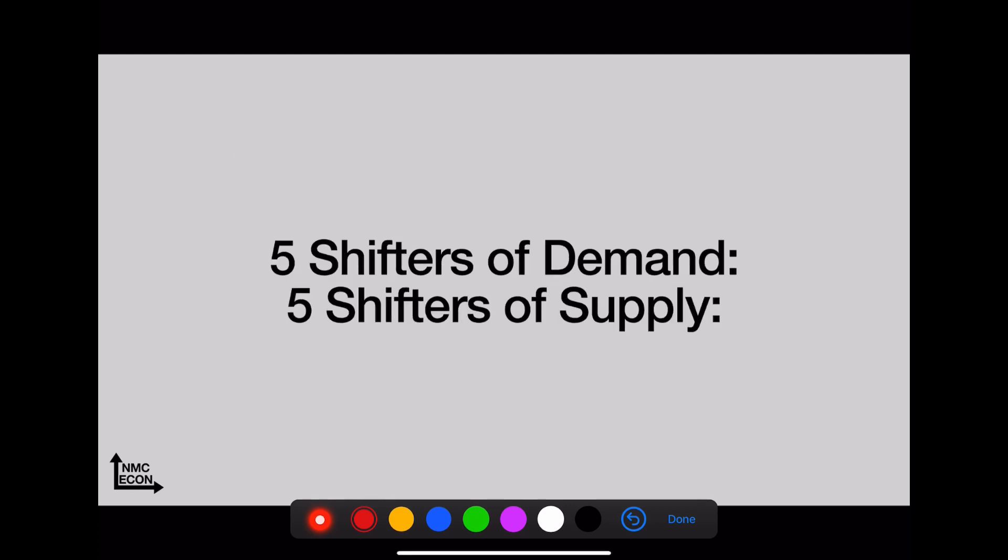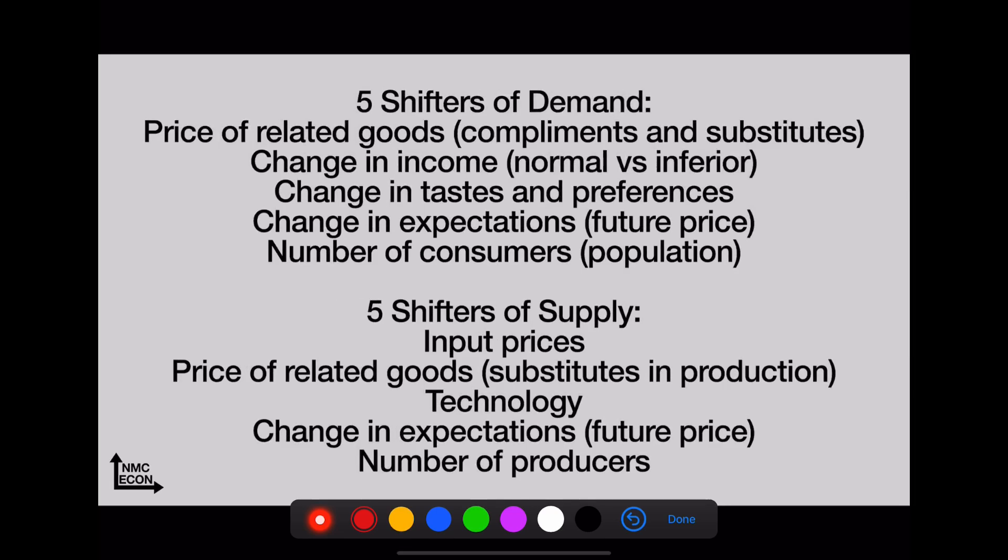The five shifters of demand and the five shifters of supply—you gotta know these. Here they are for demand: the price of related goods—this is complements and substitutes. Complements you consume together, substitutes take the place of each other. Change in income—if you have more money you're going to be buying more of a normal good. However, if you have more money you're going to probably stop buying the inferior goods. You'll prefer the normal goods.